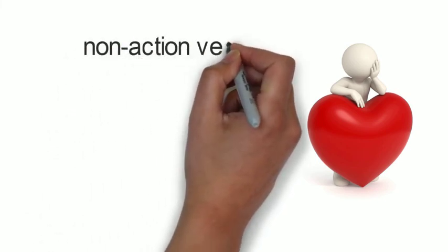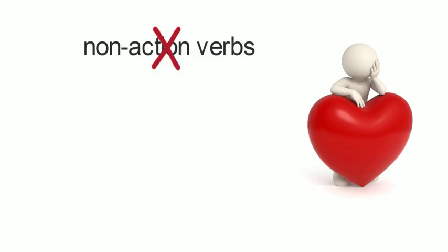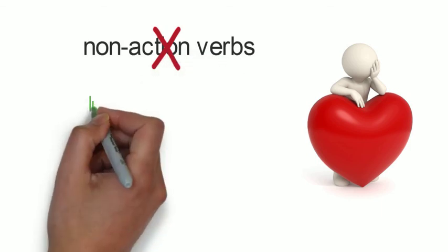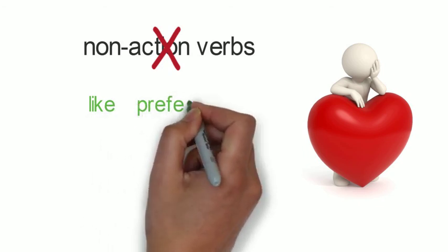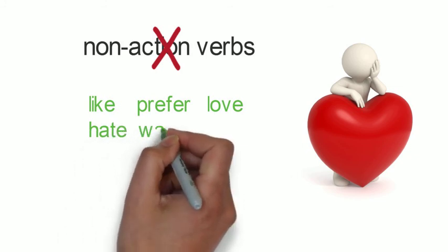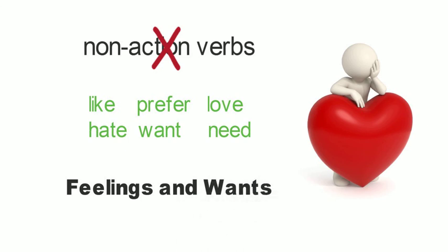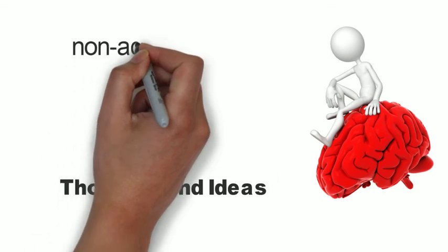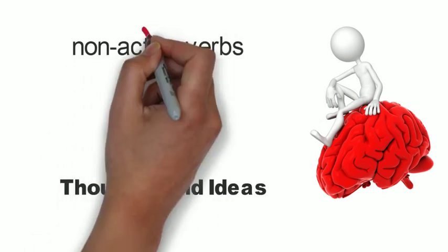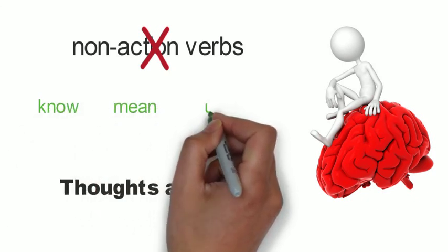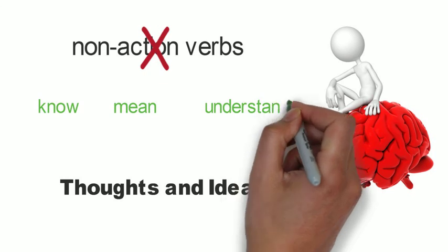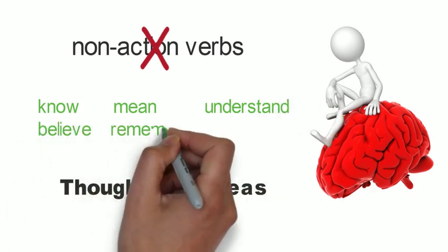We can't use non-action verbs in the present continuous tense. These are verbs such as like, prefer, love, hate, want, and need. These verbs don't show actions — they show feelings and wants. Verbs that show thoughts or ideas are also non-action verbs. These include know, mean, understand, believe, remember, and forget.